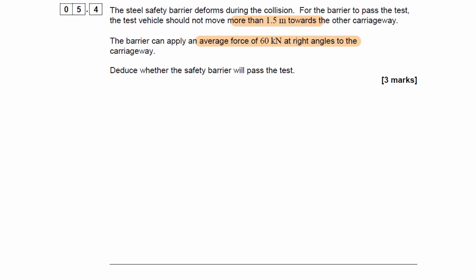The maximum work done by this average force and this distance, work done as force times distance, would be 60,000 multiplied by 1.5 which would be 90,000. So in other words, when a car crashes into this barrier, the maximum energy that the barrier can remove whilst operating within the safe parameters is 90,000 joules.